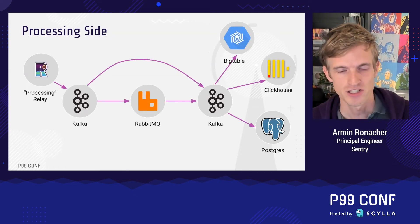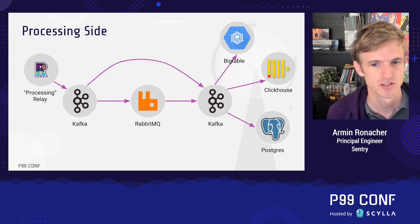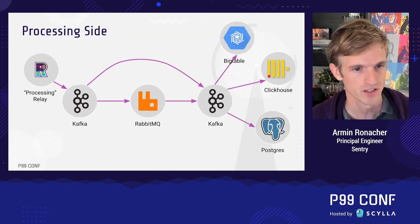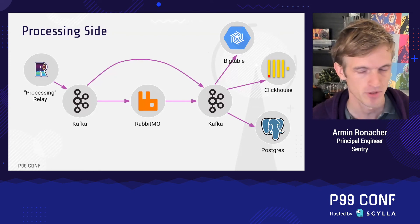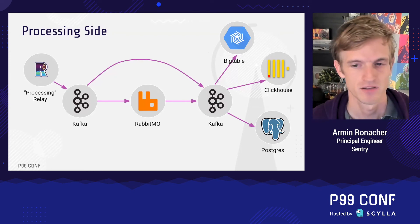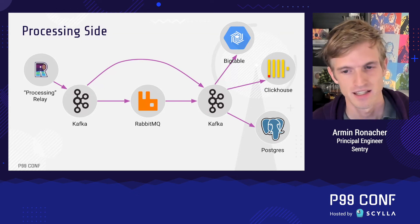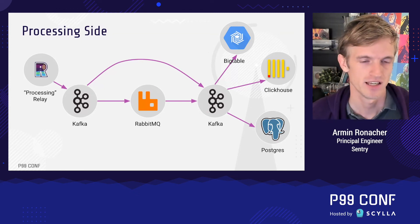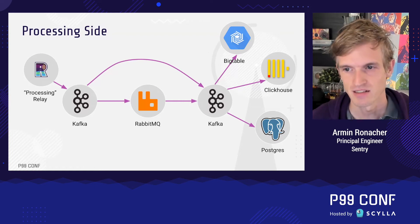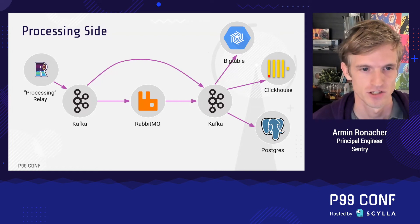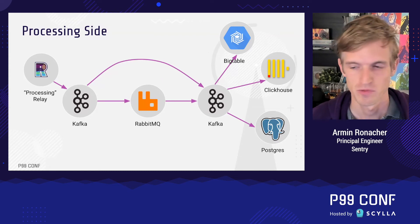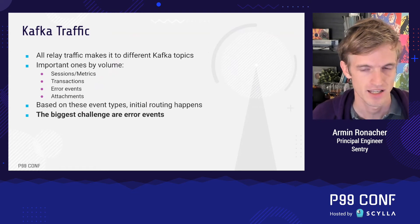On the infrastructure side, everything from the innermost relay writes directly to Kafka — not one Kafka topic but different Kafka topics, and we're quite happy with that. For some events like sessions we don't have to talk to RabbitMQ at all, but for error events we go through RabbitMQ. Once data is done processing it goes into Bigtable for JSON dumps, we aggregate data into ClickHouse, and we store mutable data in Postgres.